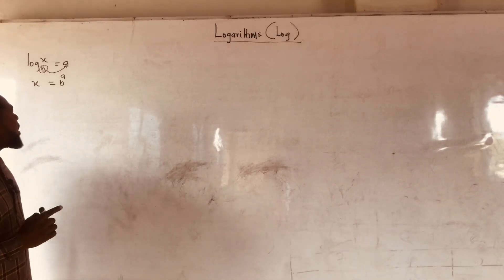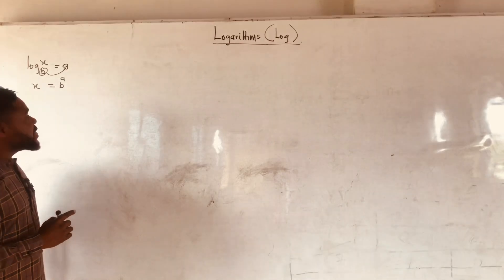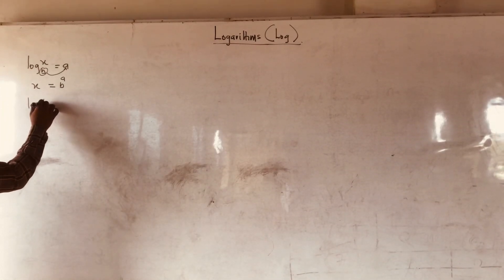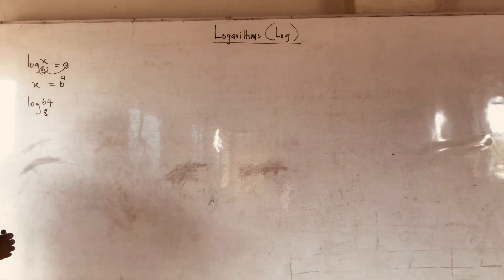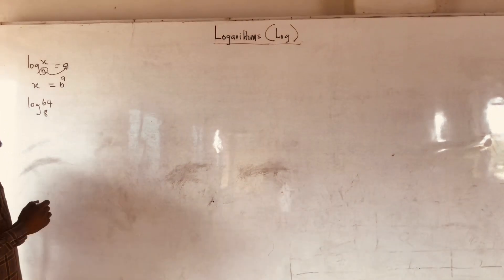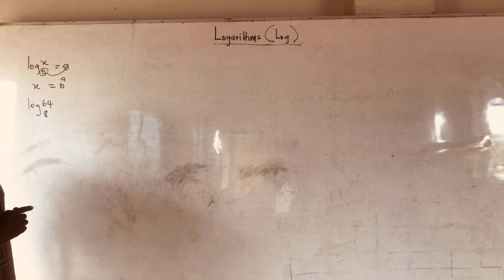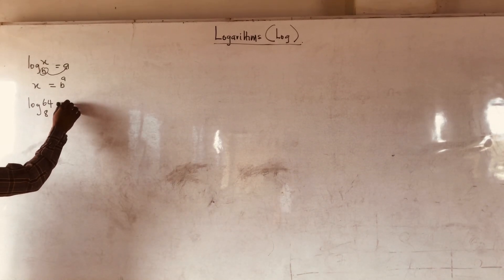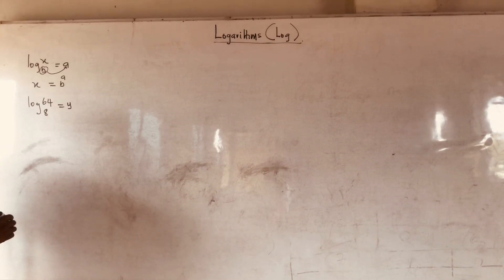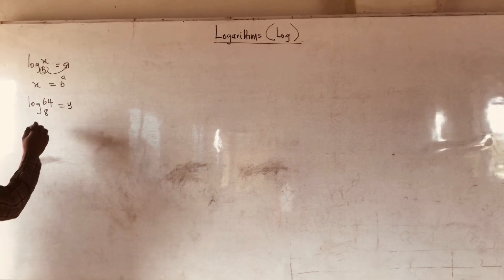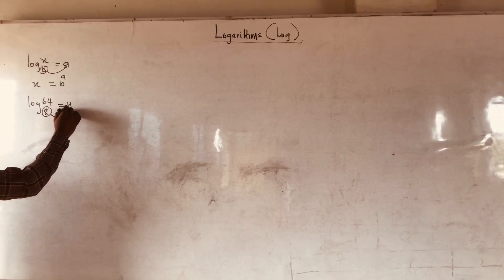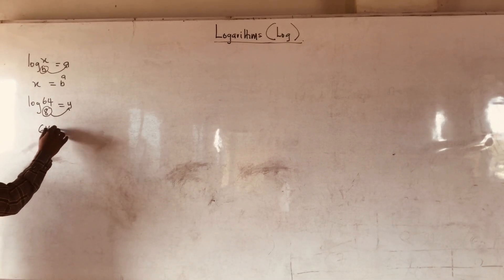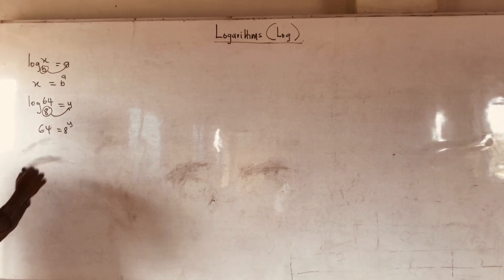Now let us look at how we can use this definition to simplify log 64 base 8. If you have to simplify log 64 base 8, what you first of all do is that you equate it to any variable of your choice — let's say y. Then after that, you use your base here to raise to the power y, so that you have 64 equal to 8 raised to the power y.